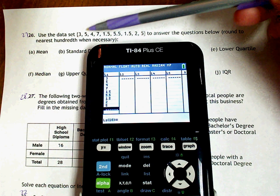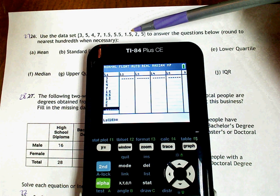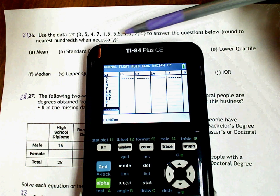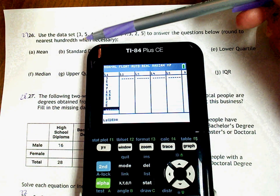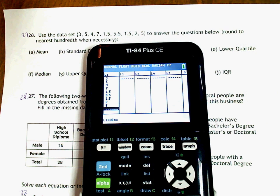So I am going to go back and check and make sure. So I have a 3, a 5, a 4, 7, 1.5, 5.5, 1.5, 2 and 5. Maybe a good thing to do is as you are typing them in, cross them out so you won't lose your place. So that might be a good suggestion.